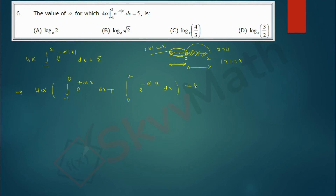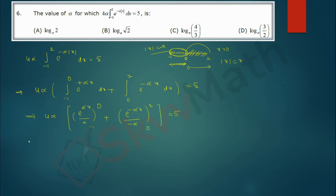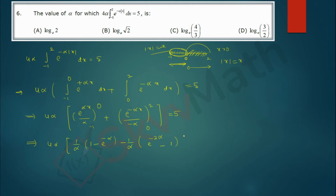The problem is now simple — we integrate e to the power of x with a coefficient α. The integration gives: (1/α)·e^(αx) evaluated from −1 to 0, plus (1/(−α))·e^(−αx) evaluated from 0 to 2, all equals 5. Substituting limits: upper limit x=0 gives e^0 = 1; lower limit x=−1 gives e^(−α). For the second part, upper limit x=2 gives e^(−2α); lower limit x=0 gives e^0 = 1.